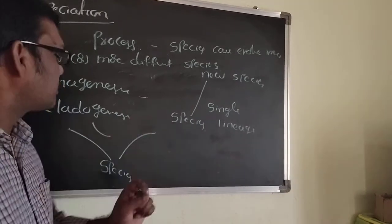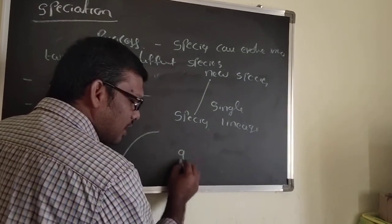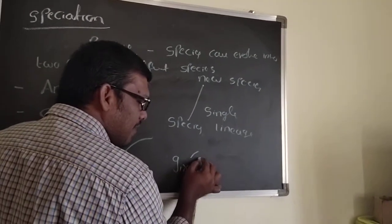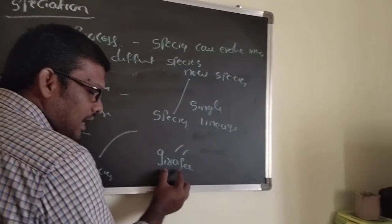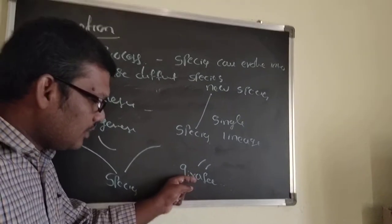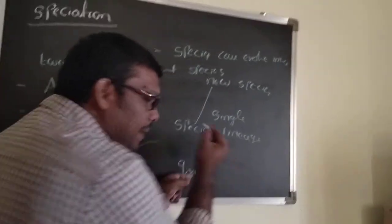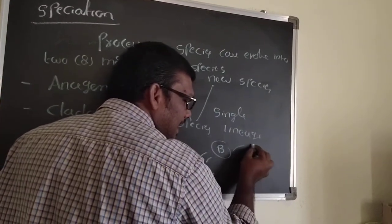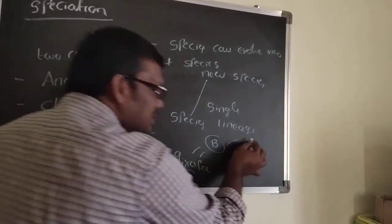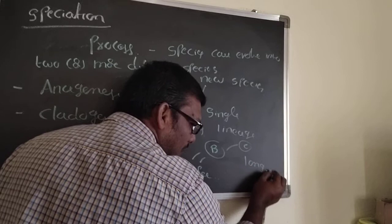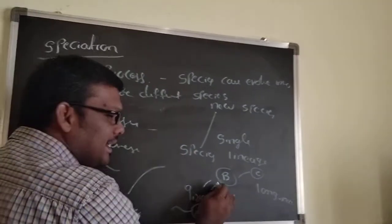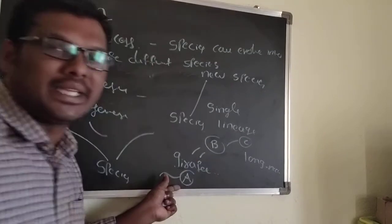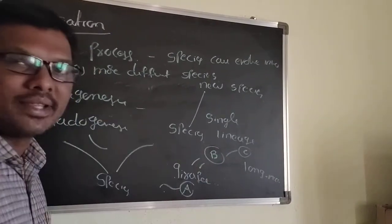For an example of anagenesis, consider the giraffe. The original organism (A) had a short neck, formed organism B, and then A became extinct. B formed C, and B became extinct. C is the present long-necked giraffe — short neck to intermediate neck to long neck — with a single lineage forming one new species.